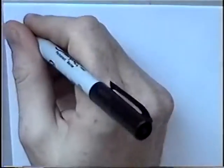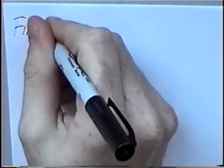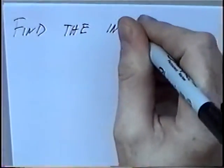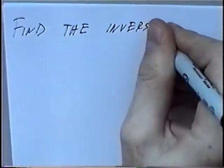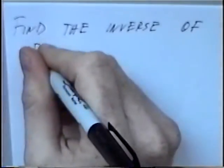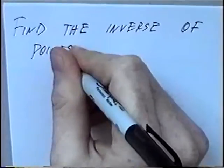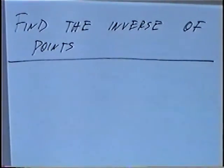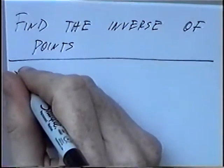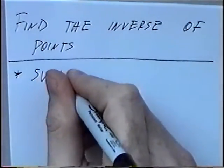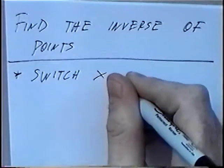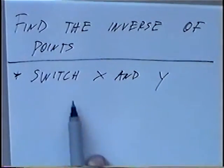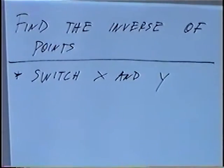The title of the first section today is: find the inverse of points. The definition for this section: to find the inverse, switch x and y. So if we have a point, we can switch the x and the y to find the inverse.